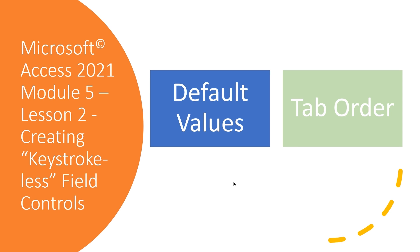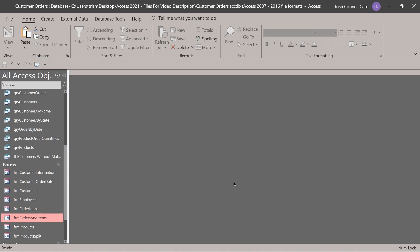Our second lesson is creating keystroke-efficient field controls. These are controls that lend themselves to efficiency. We're going to deal with default values and tab order. Imagine you've been tasked with entering 150 orders for a particular date — say 6/14/2010. Instead of having to type the order date every time, you can set a default value on a field.